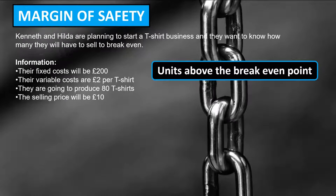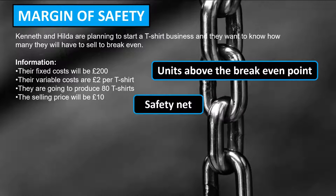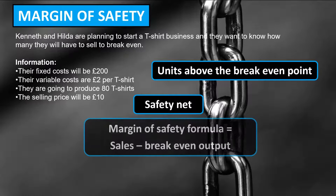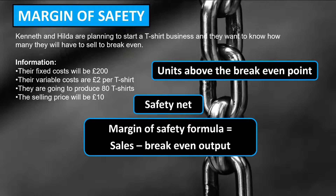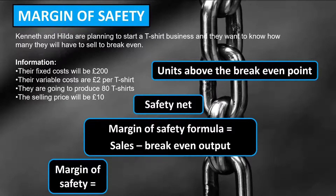If a business is producing and selling more than the breakeven level of output, then a profit is being made and they have what is known as the margin of safety — effectively a safety net. The margin of safety is the number of units that the business predicts to sell above their breakeven point. The formula is: sales less the breakeven output in units. One assumption in breakeven analysis is that whatever the business produces it also sells, unless told otherwise — which is a key limitation to bear in mind.